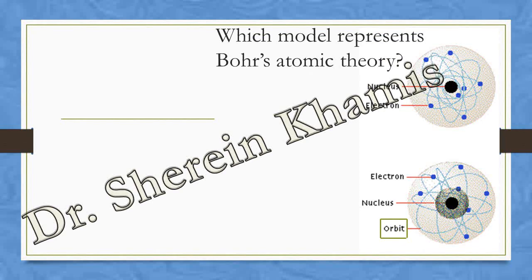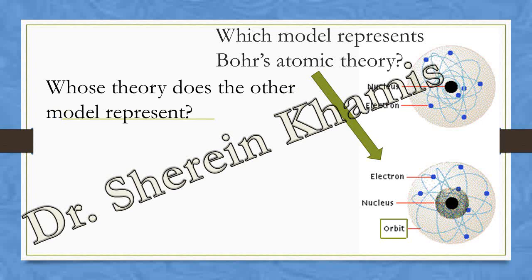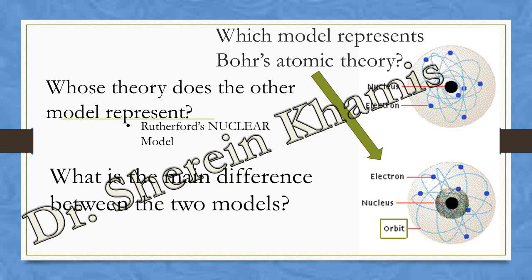Another kind of question: which model represents the Bohr atomic model? We have here two models. The first one has a nucleus and electrons in different areas or different places that move. The other one has a nucleus and electrons in certain amounts with orbits or orbitals that contain the electron. The second one is the Bohr atomic model. Whose theory does the other model represent? It represents Rutherford's nuclear model, depending on the presence of a nucleus.